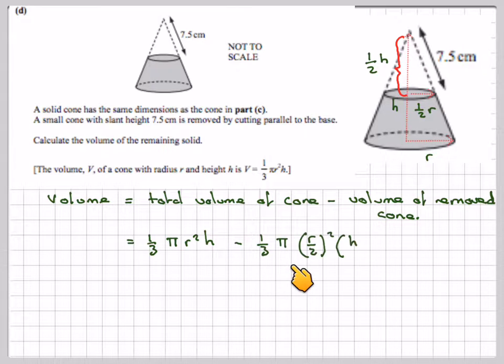Minus 1 third pi r over 2 squared, half the radius, times h over 2.